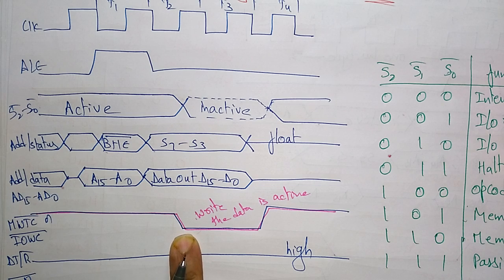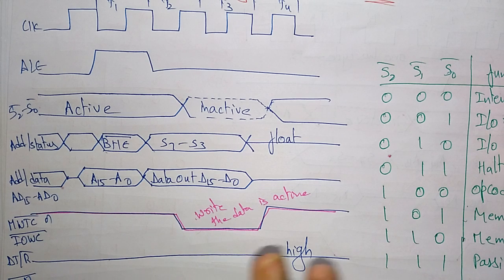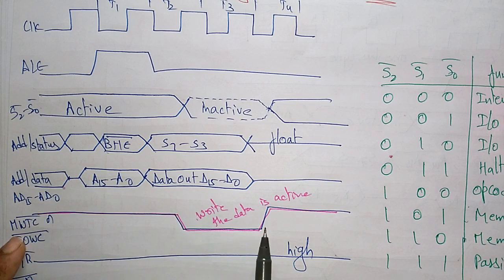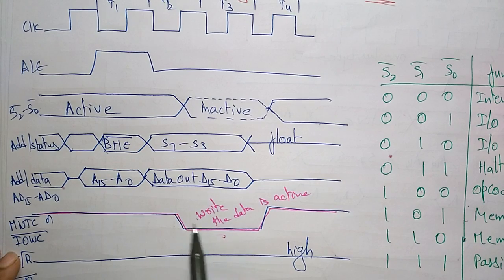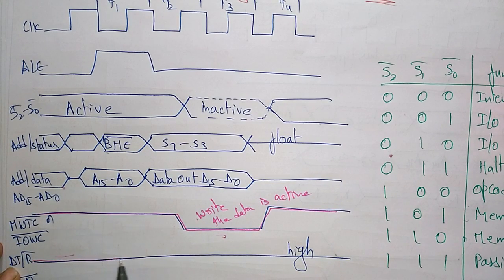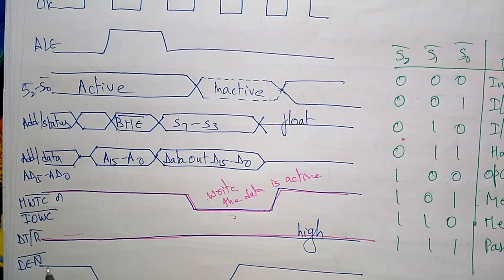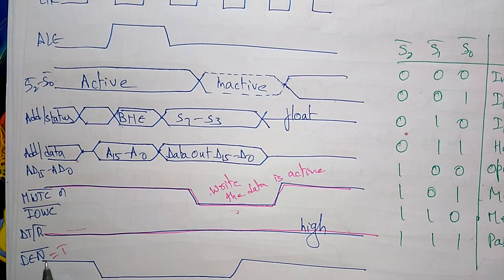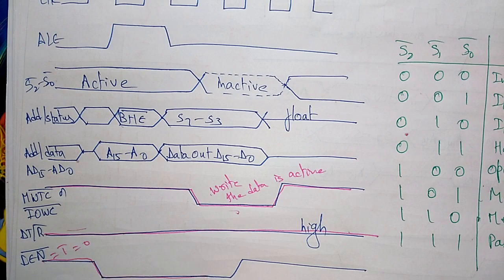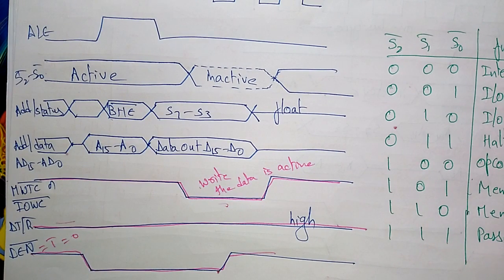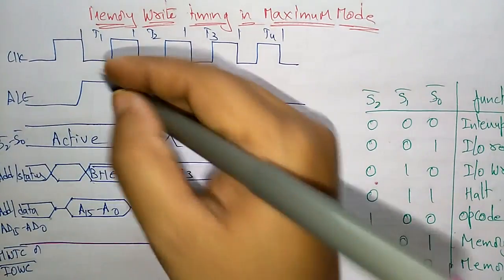That data has to be written whether it is a memory write or I/O write. Both memory and I/O use the same timing diagram. The processor writes data to either memory devices or input/output devices. In the memory write timing, DT/R bar is always in the high state (data transmitting = 1). DEN bar (data enable) is zero bar, so it becomes active low — active from the first clock pulse to the end, meaning data is enabled.